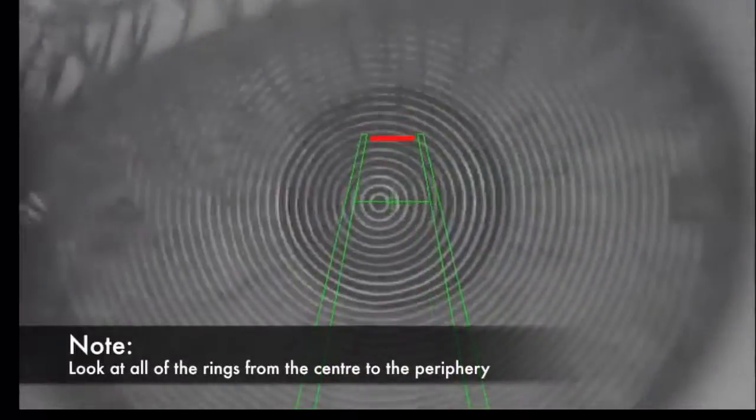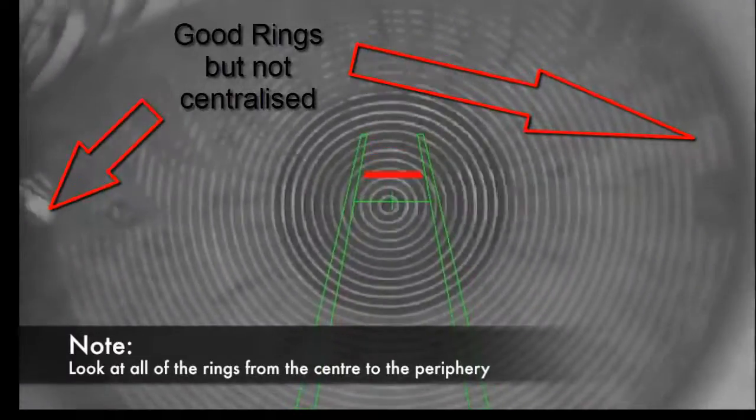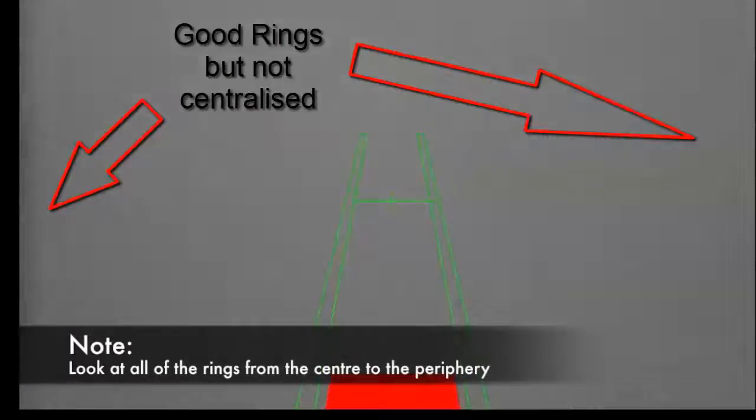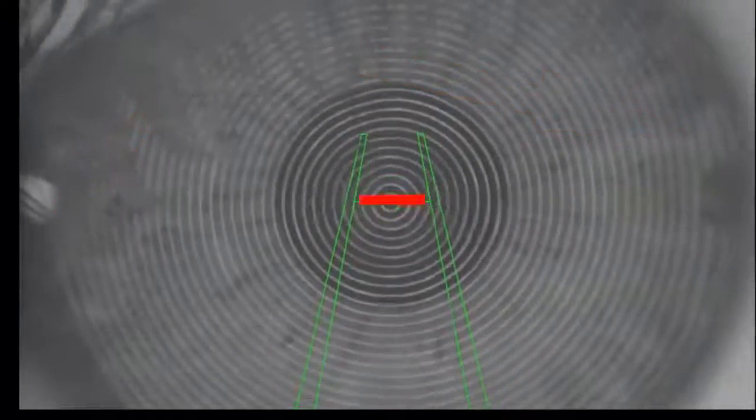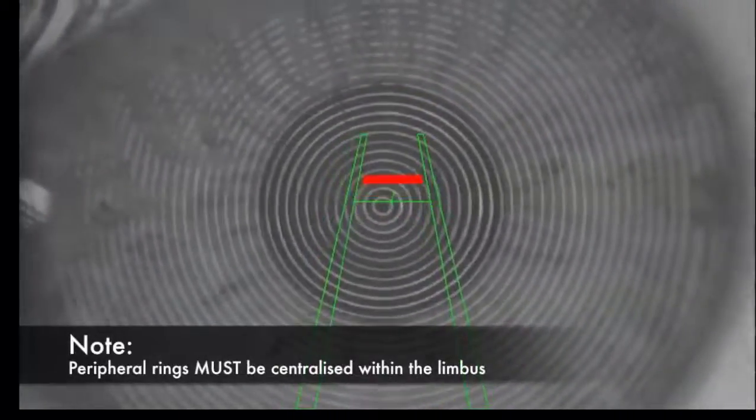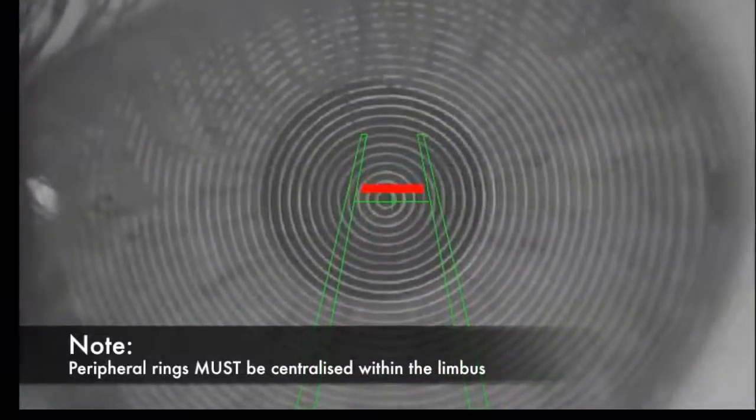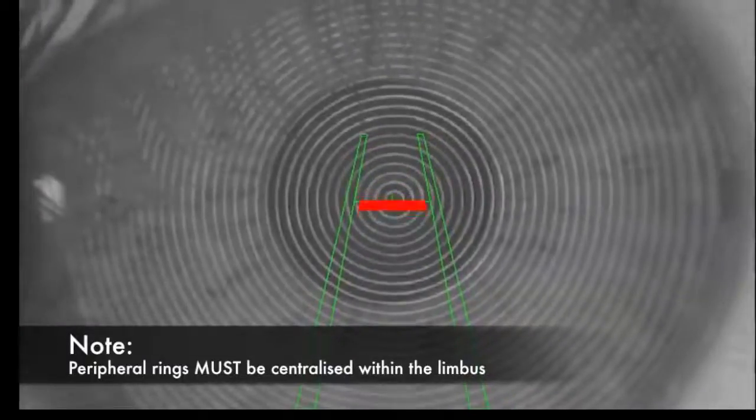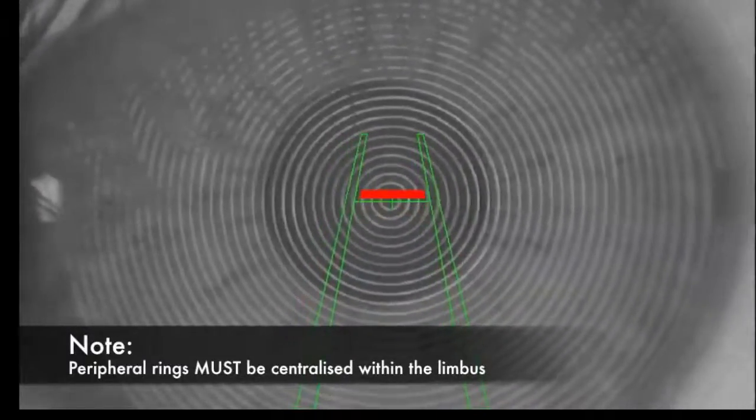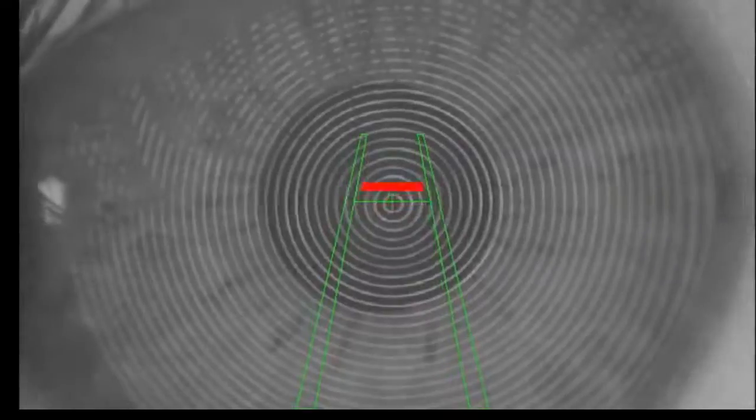Once we have the fixation centralized, we need to look at the data quality. This is where we want to analyze for ring jam before saving the desired topography. In this example here, we see that all of the rings from the centre to the periphery are intact and are of good quality.